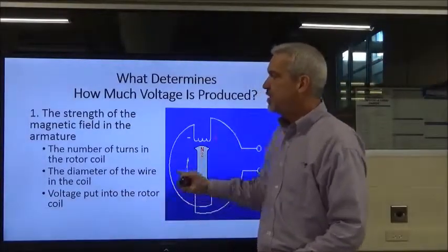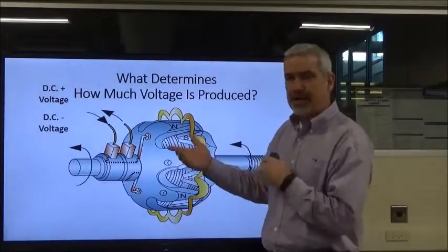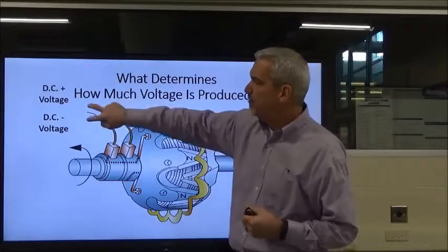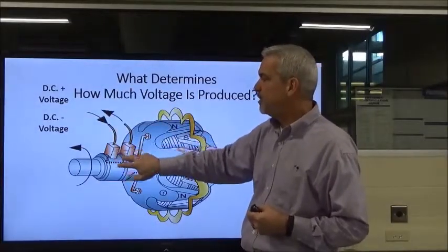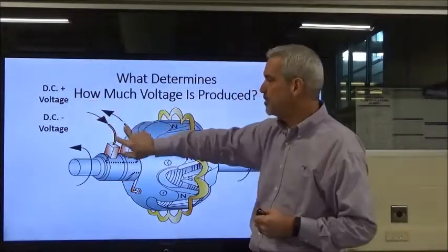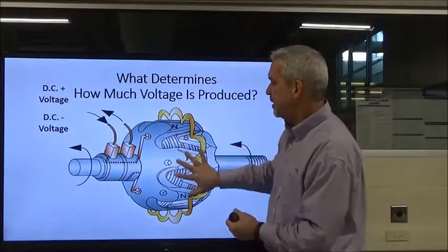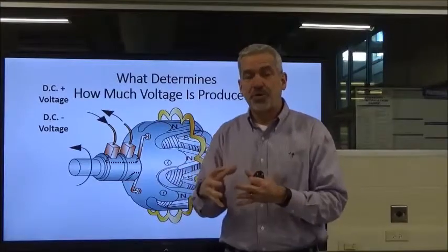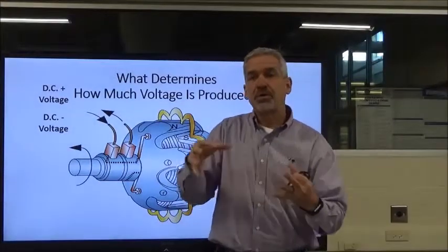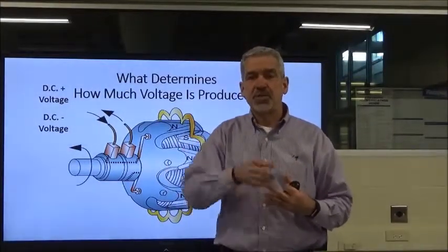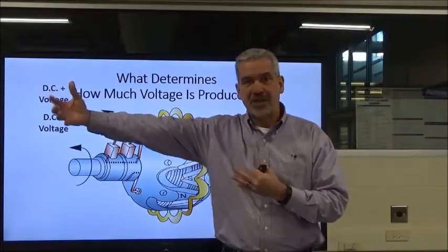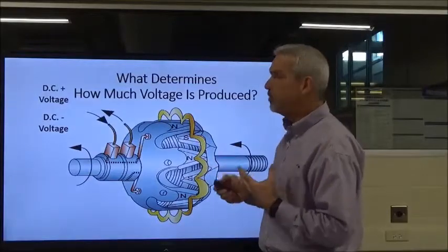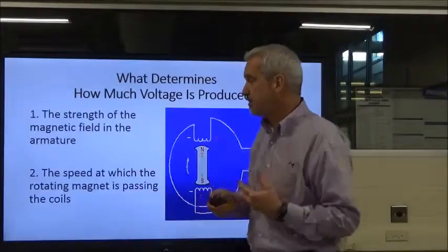Going back to our previous lecture, remember we vary the voltage coming in from our external source into our slip rings and then into our coil. The more voltage we put in there, the stronger the magnetic field in the rotor. The stronger the magnetic field in the rotor, the more voltage is induced in the stator coils, which gives us a higher voltage coming out of the alternator. So those things impact how much voltage we are actually creating.